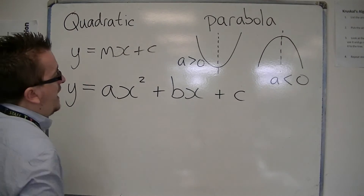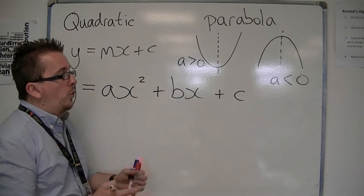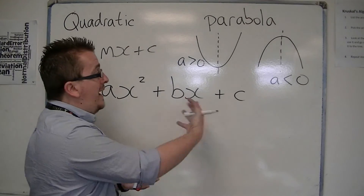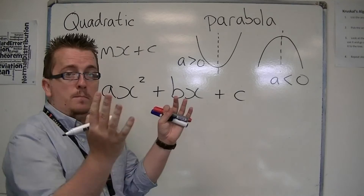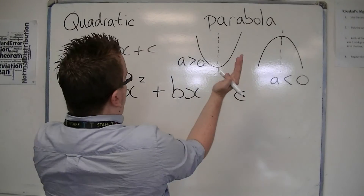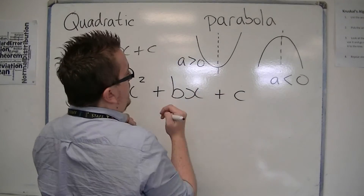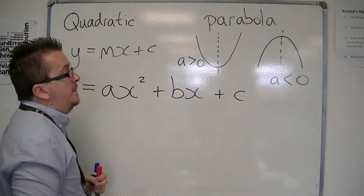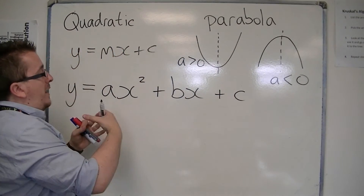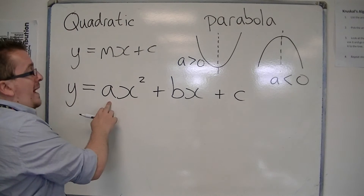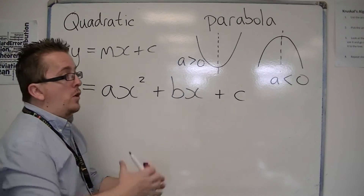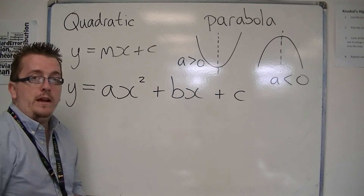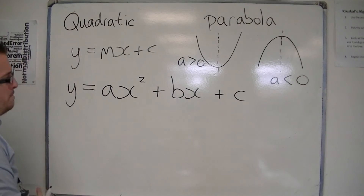The value of a also tells you the width of the curve. A greater value of a means it will be stretched further in, so it will be narrower. And a value approaching zero will be more spread out.